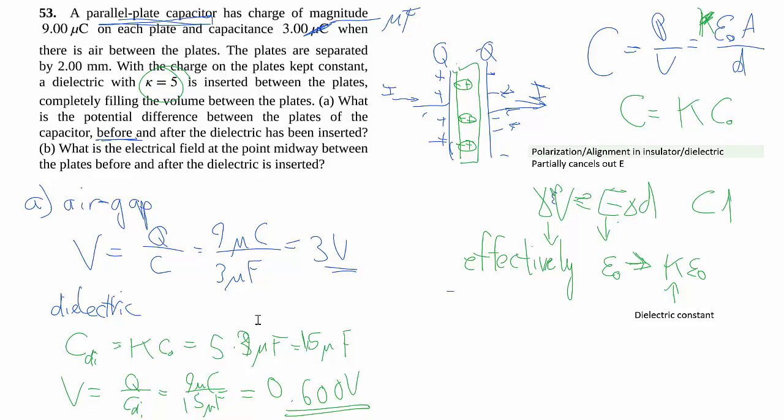Like I was saying, the molecules in the insulator or dielectric align and polarize within the electric field set up by the two plates, and partially cancel out the electric field to reduce your voltage across the two plates, even though the same amount of charge is on the plates.